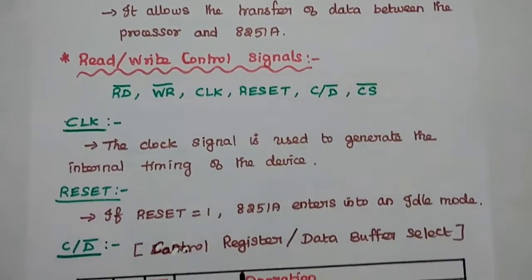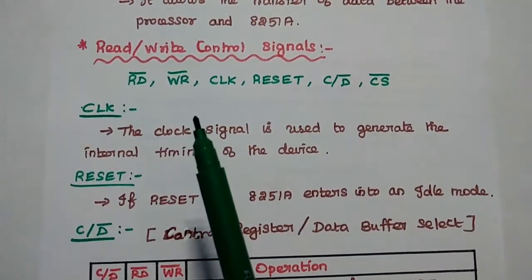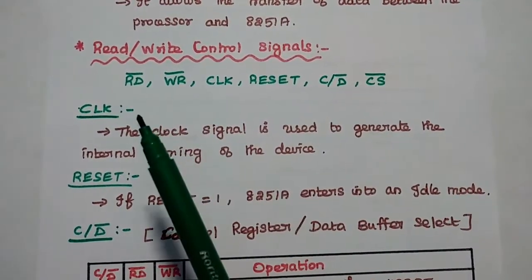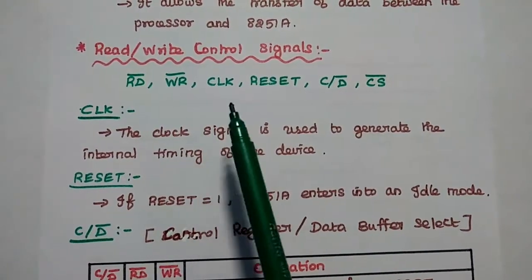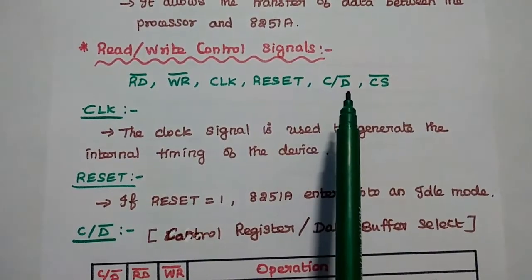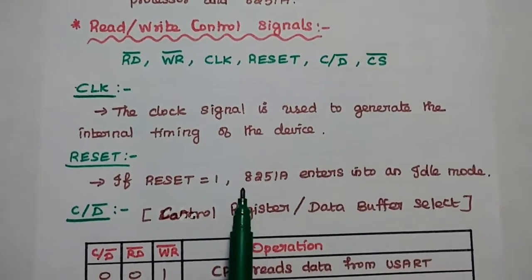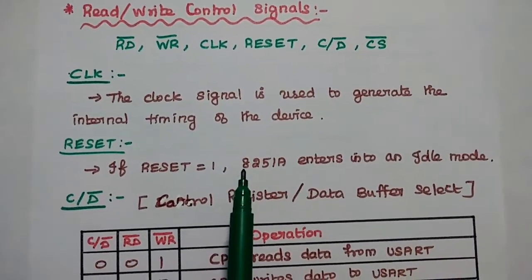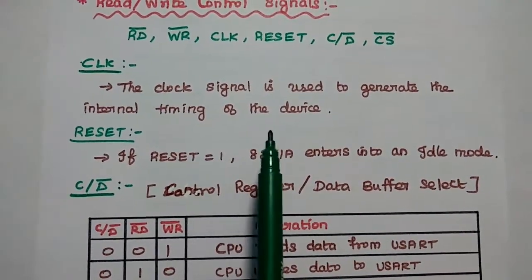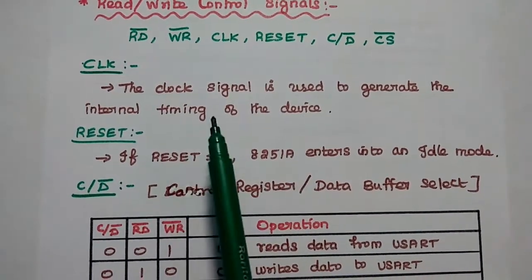The next group is the read/write control logic signals. There are six control logic signals: read bar, write bar, clock signal, reset, control register or data buffer select (C/D bar), and chip select. The clock signal is used to generate the internal timing of the device.